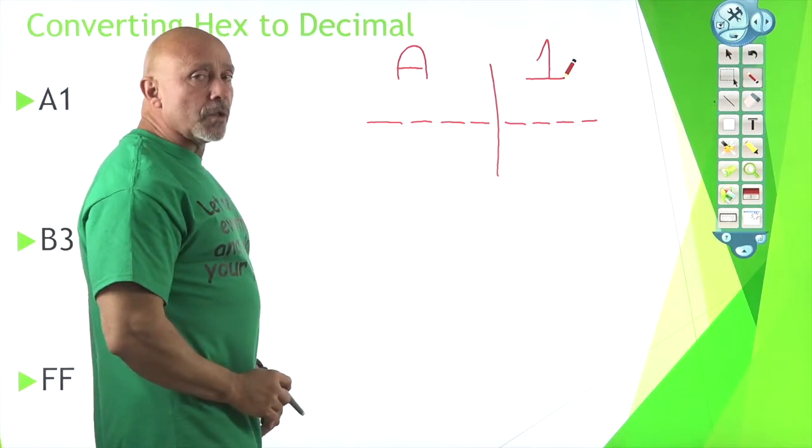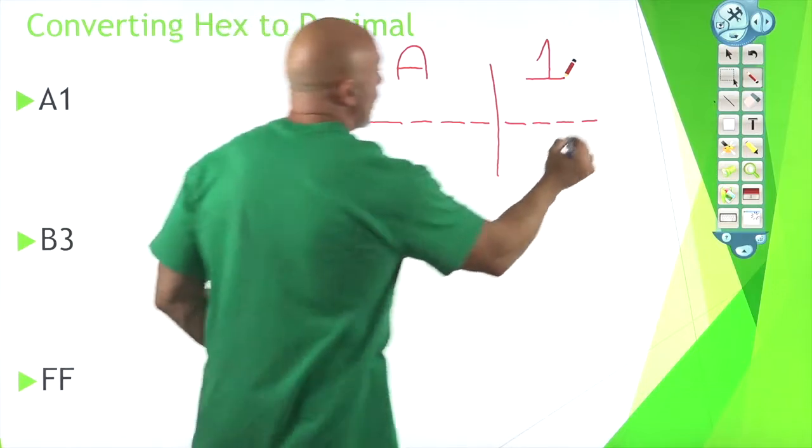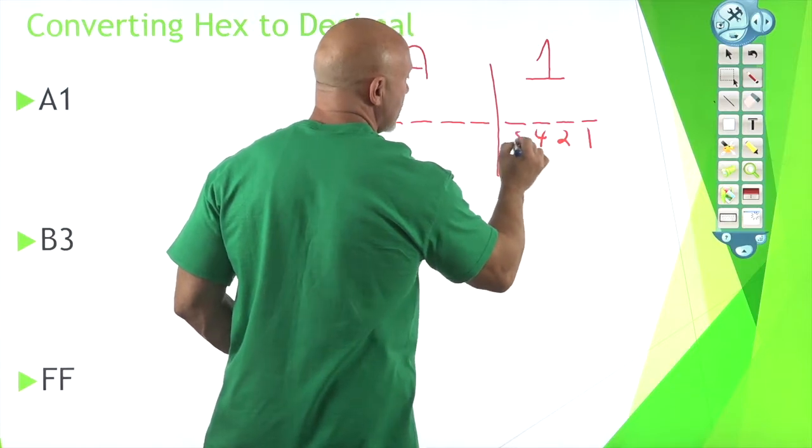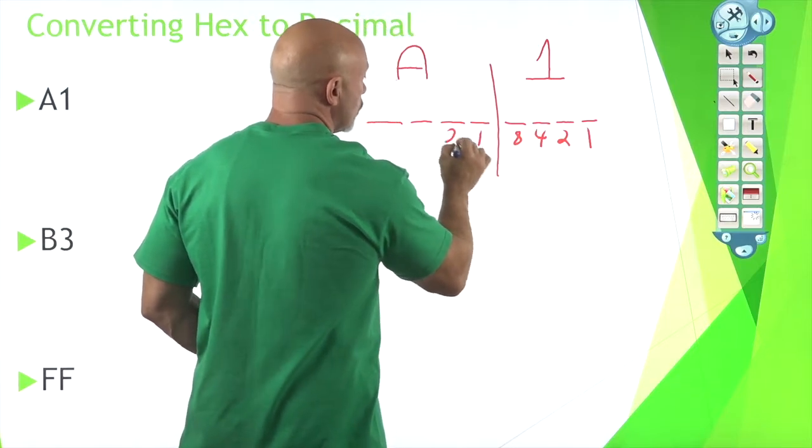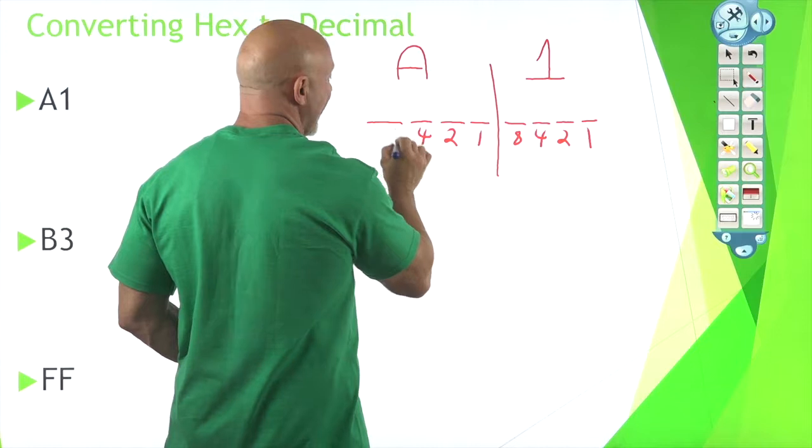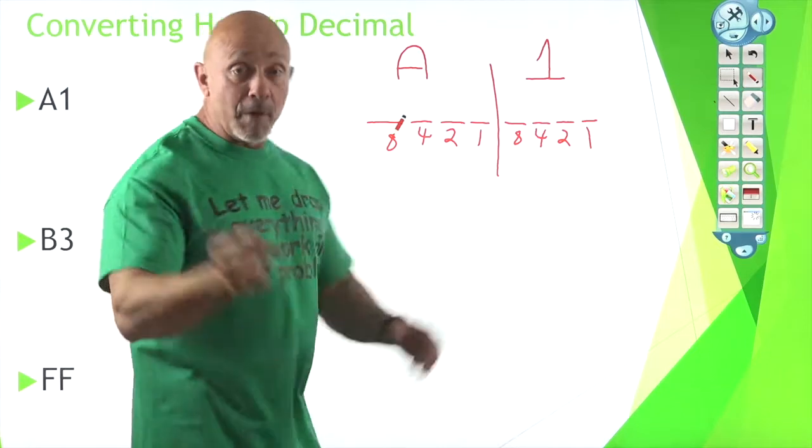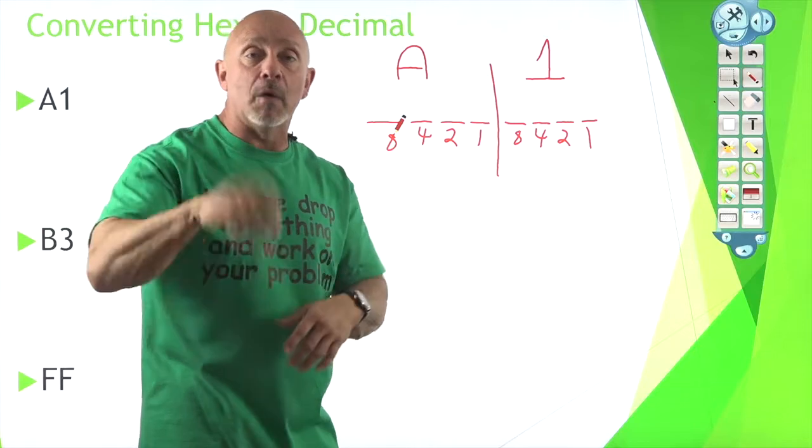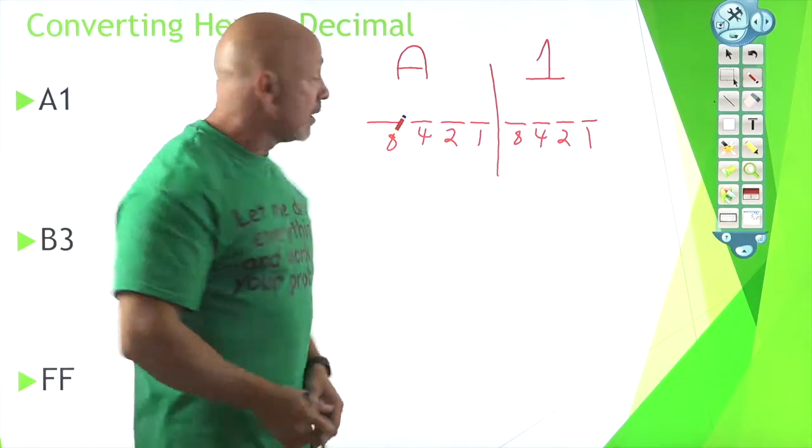This side is for the A and this side is for the number one. Let's put the bit values underneath each one: one, two, four, eight, one, two, four, eight. Well, if we know our hex table, which we should, but regardless I have a spreadsheet that I'll upload so everyone can have it.